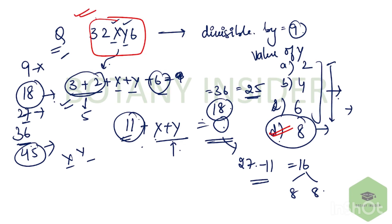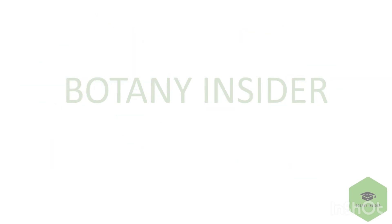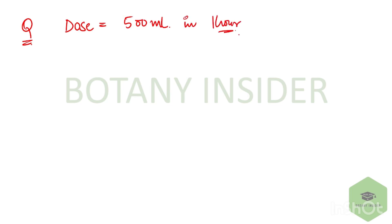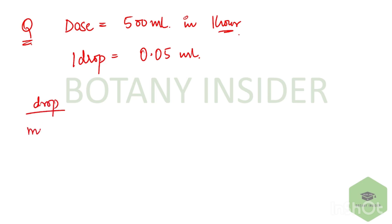The correct answer was option D, that is 8, for this divisibility question. Remember this divisibility concept — it might be asked tomorrow as well. Then there was one question saying that a dose was injected to a kid at 500 ml in one hour, with a per drop size of 0.05 ml. The question asked: what is the drop count per minute? This was a repeated question from a previous year.